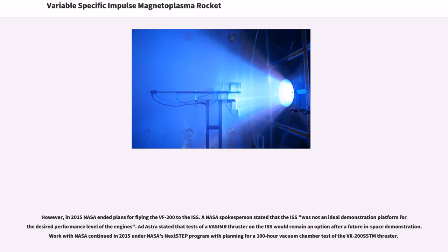However, in 2015 NASA ended plans for flying the VX-200 to the ISS. A NASA spokesperson stated that the ISS was not an ideal demonstration platform for the desired performance level of the engines. Ad Astra stated that tests of a VASIMR thruster on the ISS would remain an option after a future in-space demonstration. Work with NASA continued in 2015 under NASA's Next Step program with planning for a 100-hour vacuum chamber test of the VX-200 SSTM thruster.